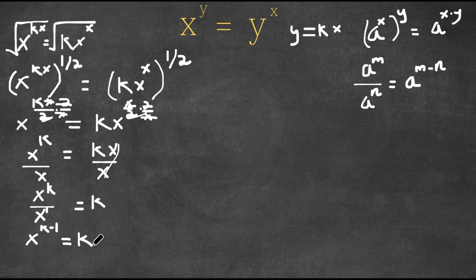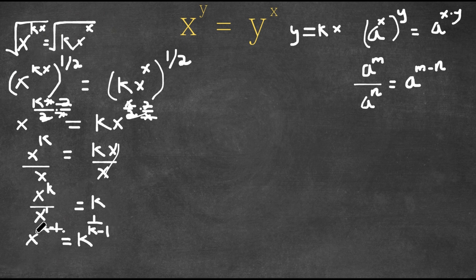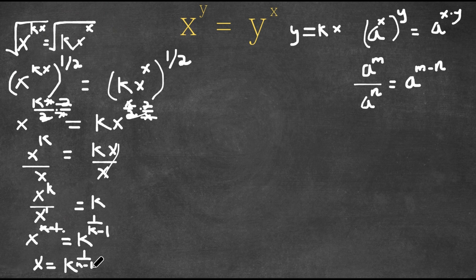Now I'm going to take the power of one over k minus one on both sides. That cancels the exponent on x, and on the right side we get k to the power of one over k minus one. So x equals k to the power of one over k minus one.